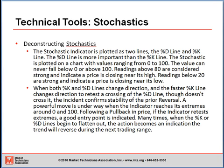Readings above 80 are considered strong and indicate prices closing near its high for the period, and readings below 20 are strong and indicate prices closing near its low. When %K and %D lines change direction, and the faster %K line changes direction to retest a crossing of the %D line but doesn't penetrate it, this generally suggests price is stable within the trend and is an excellent entry point, confirming the reversal from an oversold or overbought condition.